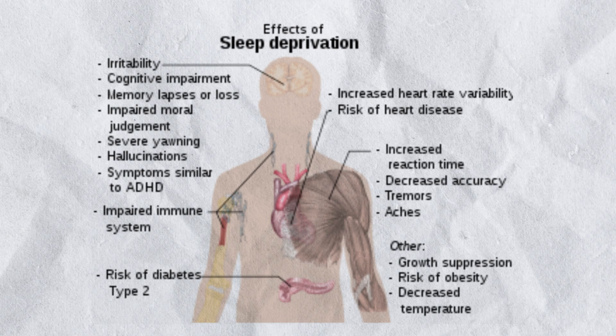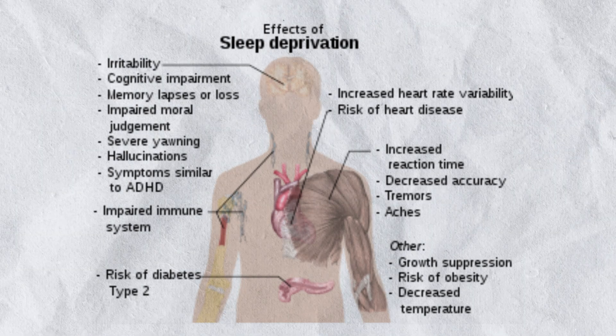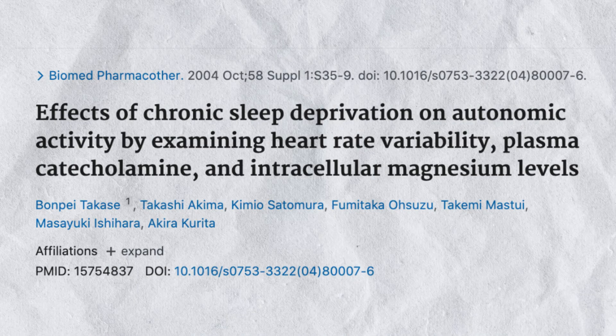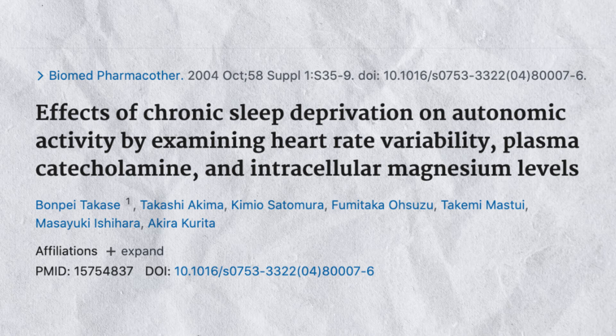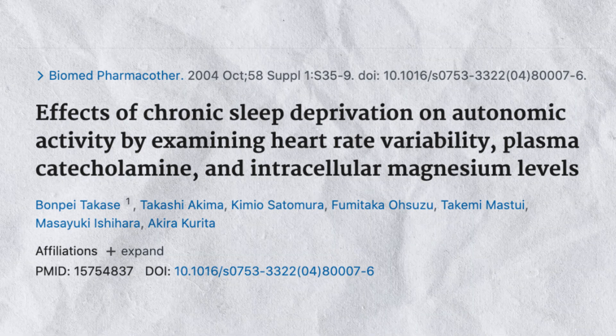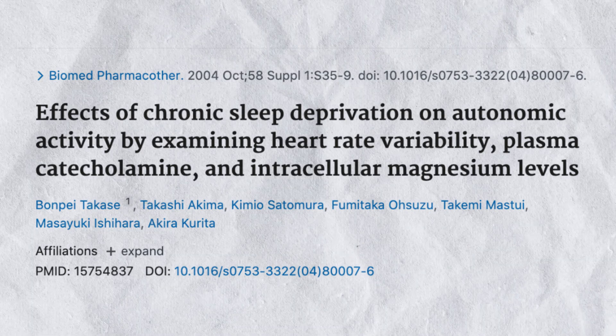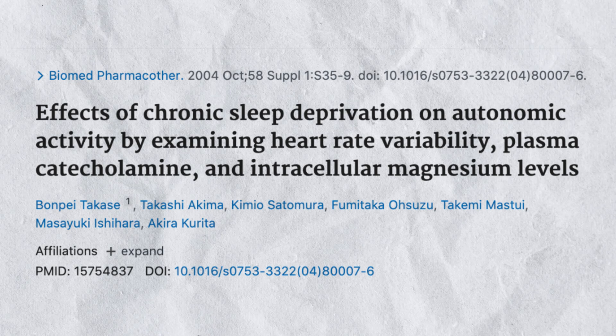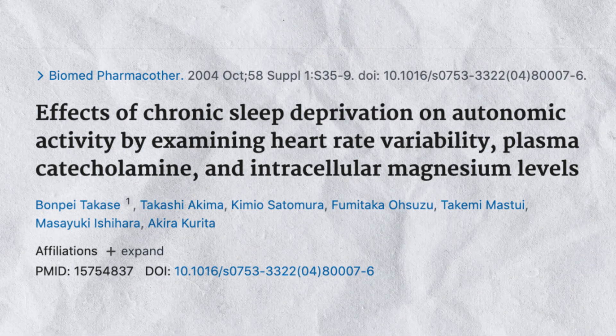Another important factor is to avoid sleep deprivation. Regularly sleeping less than seven hours per night and chronic sleep deprivation can actually lower your heart rate variability, increase plasma catecholamines, and alter intracellular magnesium levels. We need to make sure we're sleeping consistently and for long enough periods of time.